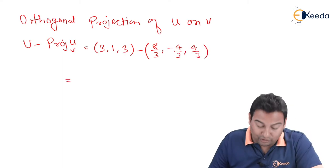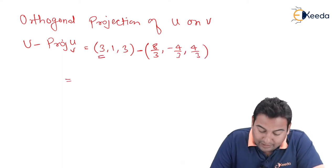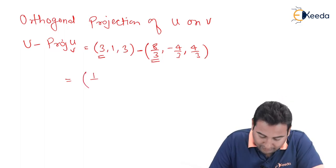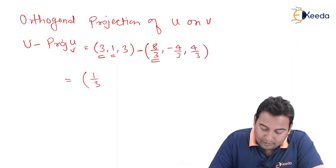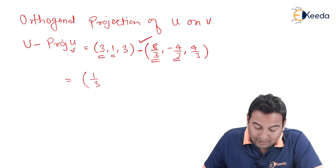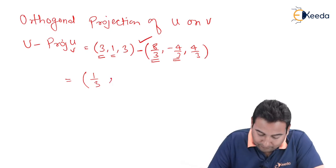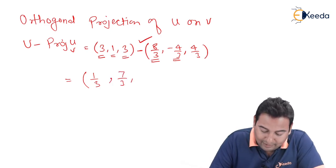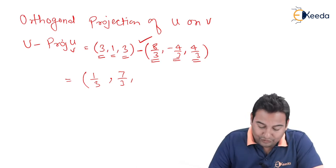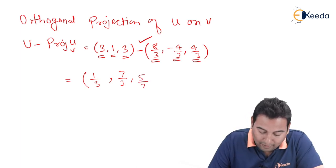We need to simplify this. It is very simple. 3 minus 8/3 which will be 1/3, 1 minus negative 4/3, but outside it is minus, therefore that will be plus, 1 plus 4/3 is 7/3. And finally 3 minus 4/3, outside it is minus, that means 3 minus 4/3 is 5/3.